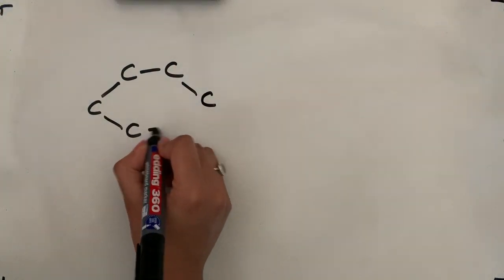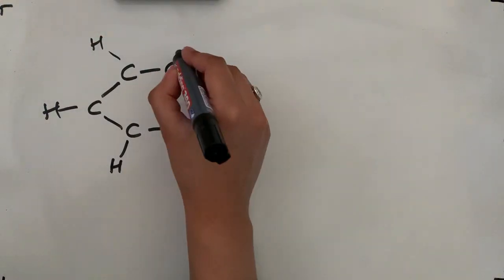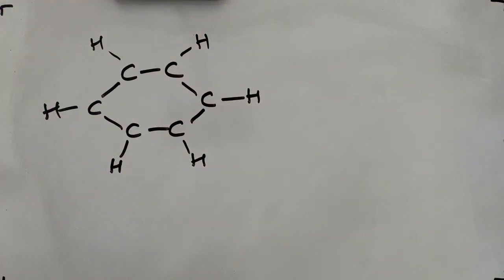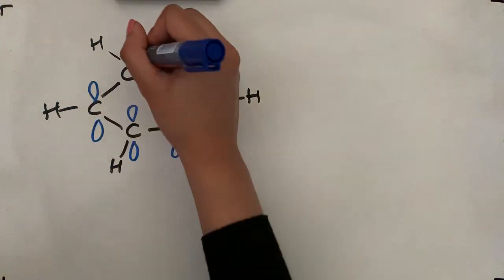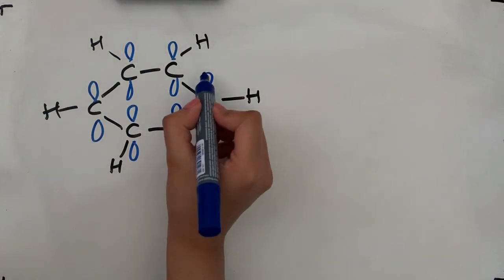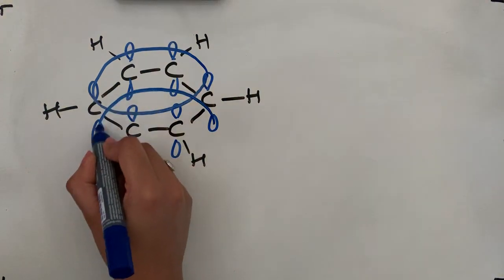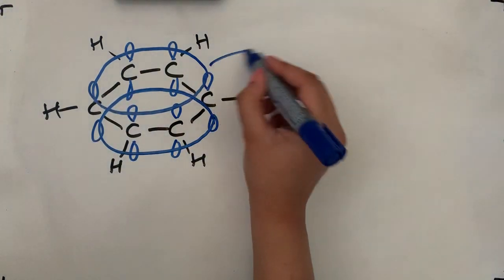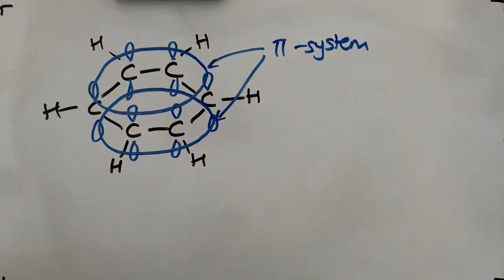Starting with the structure of benzene: we've got our carbon atoms in a six-membered ring, with hydrogen atoms in the same plane as those carbon atoms. Each carbon atom has a p orbital with an electron that has not yet taken part in bonding. Those p orbitals are 90 degrees to the plane of the atoms, and the adjacent p orbitals overlap to form a pi system above and below the plane, containing six delocalised electrons.